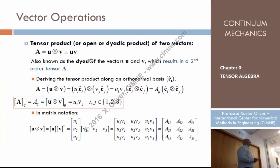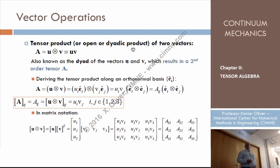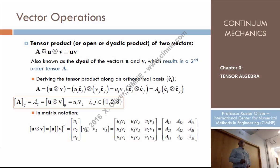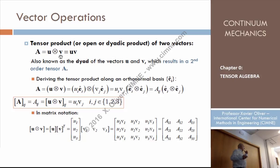Now let's consider another operation that most probably you are not familiar with: the tensor product, also called the open product or the dyadic product — there are a number of names. We'll normally call this operation the tensor product, or open product. Imagine that we have a vector U and a vector V, and we want to define the tensor product of U times V.